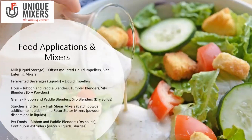For mixing flour with other ingredients — dry powder applications — ribbon and paddle blenders, tumble blenders, and silo blenders are used. For grains, ribbon and paddle blenders and silo blenders are appropriate, especially for large-scale or bulk mixing. For starches and gums, we use the high-shear mixer for batch powder with addition of liquids, or inline rotor-stator mixers for powder dispersion in liquids. For pet foods with dry solids, ribbon and paddle blenders are used; for viscous liquids, slurries, or viscous paste, continuous extruders are used.